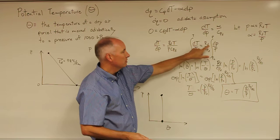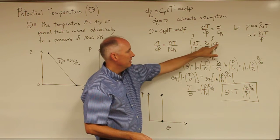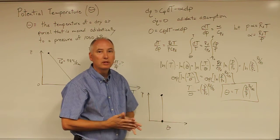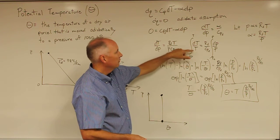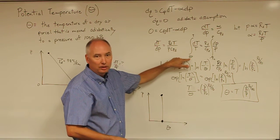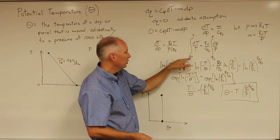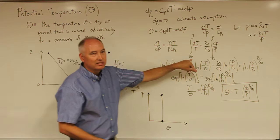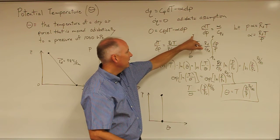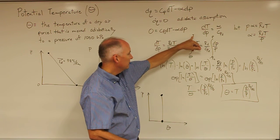We'll end up with DT over T, R sub D over C sub PD, and DP over P. And then we want to integrate this equation. We're going to integrate this equation from our temperature at 1,000 hectopascals, which is going to be defined as our potential temperature, to a temperature that is up someplace in the atmosphere at pressure P.